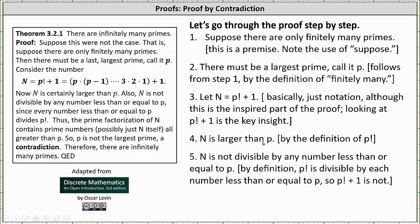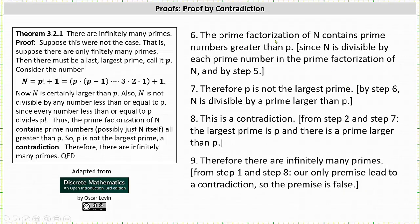Step four: n is larger than p, by definition of p factorial. Step five: n is not divisible by any number less than or equal to p — this is because p factorial is divisible by each number less than or equal to p, so p factorial plus one is not. Step six: the prime factorization of n contains prime numbers greater than p, since n is divisible by each prime in its prime factorization, by step five. Step seven: therefore p is not the largest prime, since by step six n is divisible by a prime larger than p.